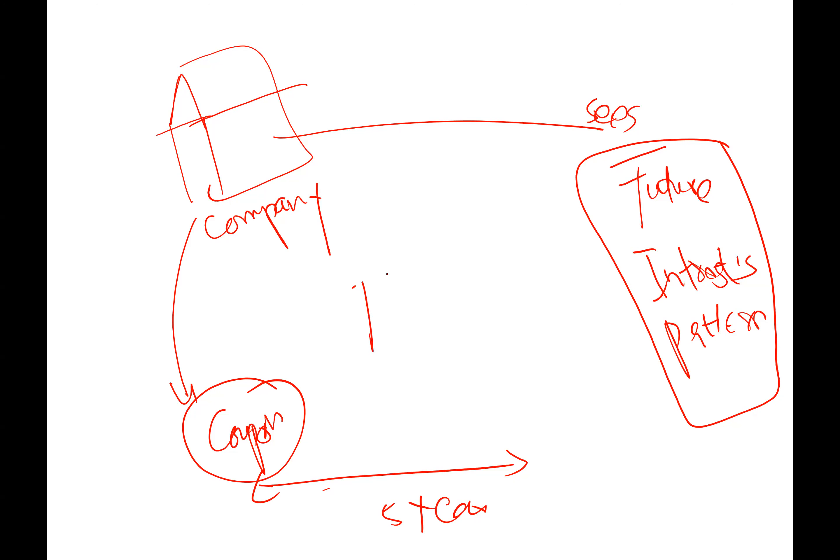When a company issues the bond, there are two types of interest rates. First is coupon. Remember, coupon interest rate is the interest rate which is given on bond face value.